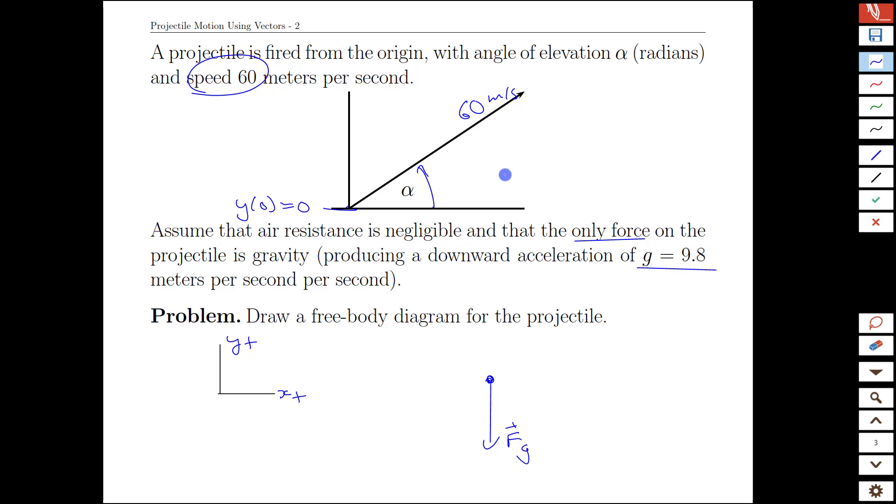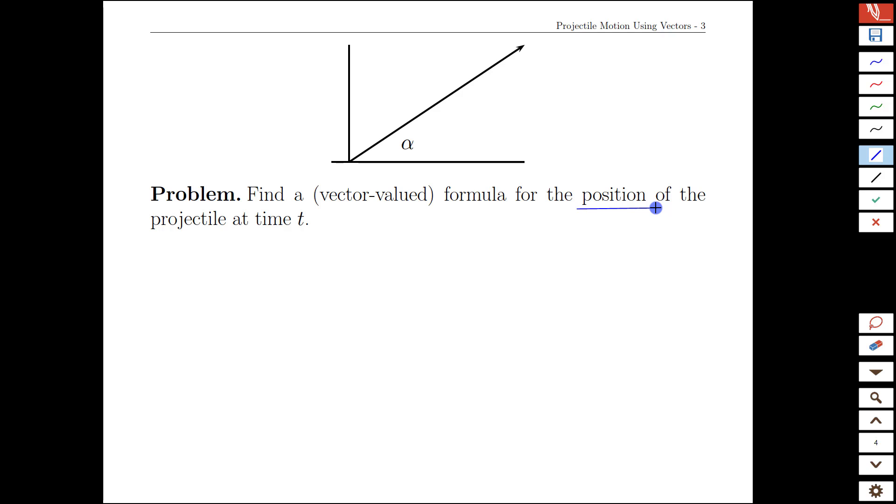What we're going to try to do now is combine our initial information with the one force that's active and see how does that lead us to the whole trajectory, the parabolic arc. We're going to get to that point by trying to find a vector valued formula for the projectile.